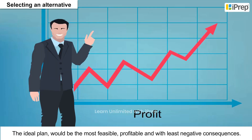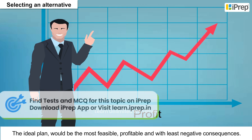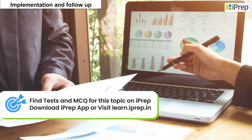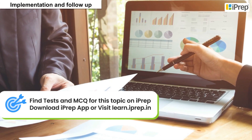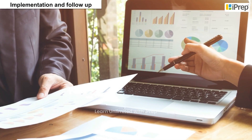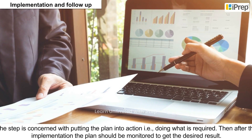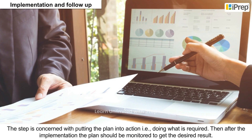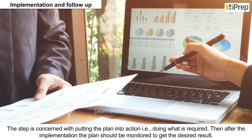Selecting an alternative: Here the best plan has to be adopted and implemented. The ideal plan would be the most feasible, profitable, and with the least negative consequences.